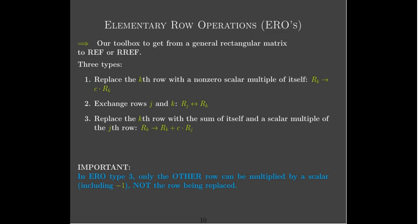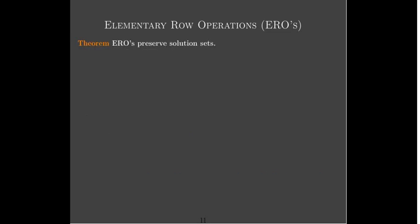Number one, it ensures that we're going to get the same solution set. Number two, we're going to be using these elementary row operations throughout the course, not just for solving linear systems, but also for determining other information about matrices or linear systems. We know that as long as we're using elementary row operations, we're going to get the correct information. As long as you're using elementary row operations of those three types, you are guaranteed that when you get to row echelon form or reduced row echelon form, the solution set for the new system is the same as for the original.